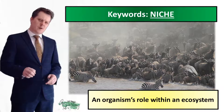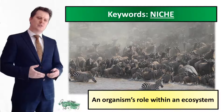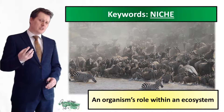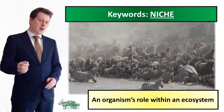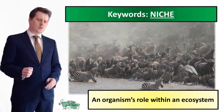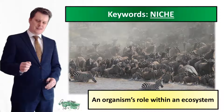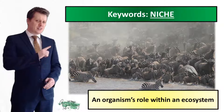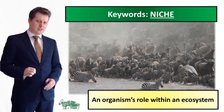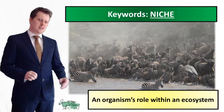Another keyword which you probably won't encounter until GCSE is niche, which is an organism's role within an ecosystem. Take for example a tree. A tree provides food because it's a producer, and it also provides shelter for animals like birds and insects. That tree's niche is to be a food source and to be a source of shelter — that is the tree's role within its ecosystem.